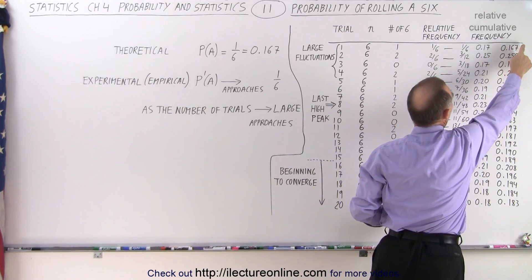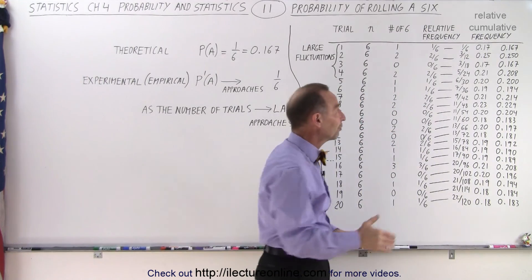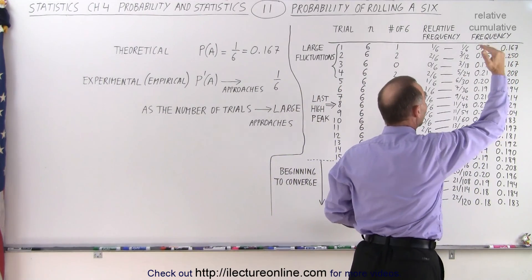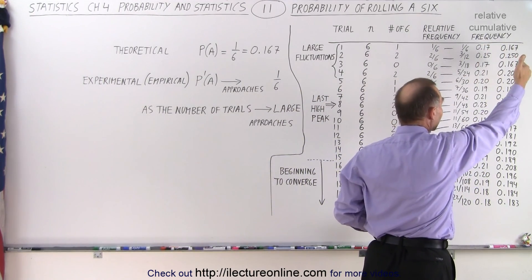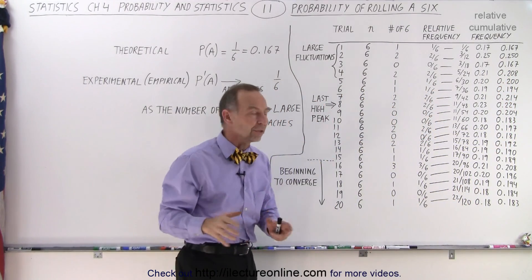Notice we started where the experimental frequency was exactly the same as the theoretical frequency. Then we went way higher, back exactly the same, higher again, and then the fluctuations began to get smaller and smaller. That is very typical. That's what we would expect.